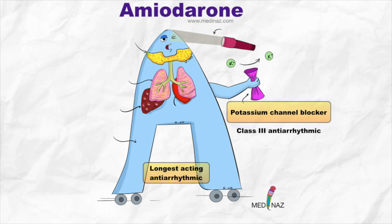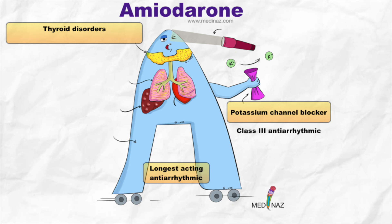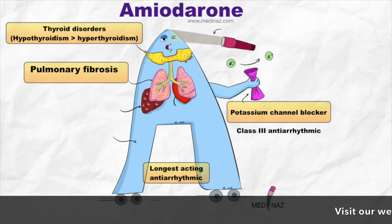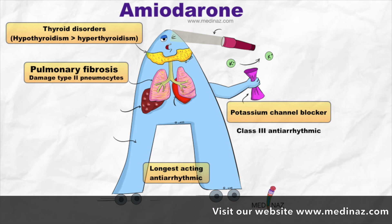Now let's discuss the side effects. Being an analog of thyroid hormone, it has iodine which can cause thyroid-related disorders. It can cause both hypo- and hyperthyroidism, but remember hypothyroidism is more common than hyperthyroidism. Amiodarone can also cause pulmonary fibrosis, especially in those people who have pre-existing lung diseases, and it especially destroys type 2 pneumocytes.